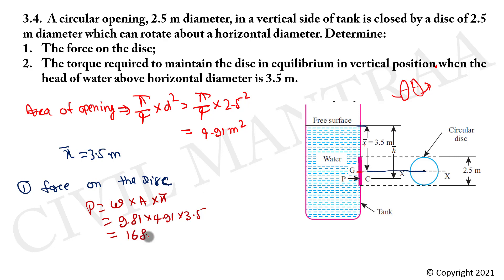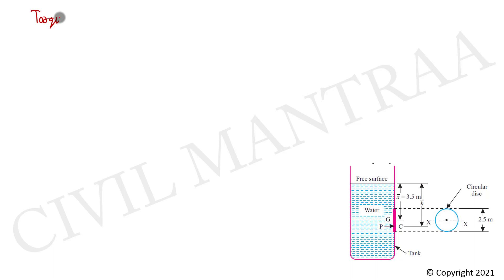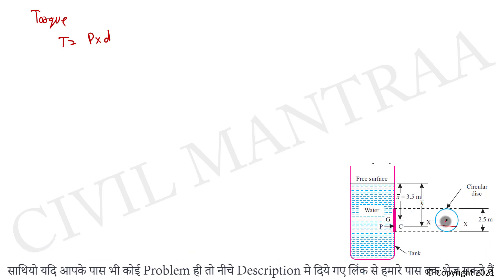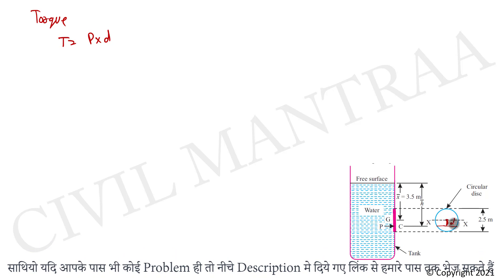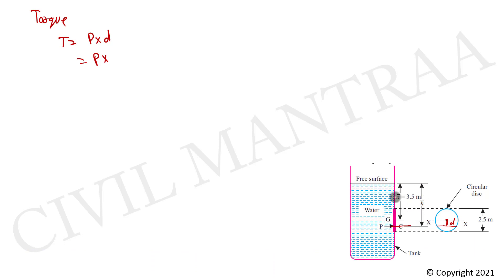Now we will find the center of pressure h-bar. h-bar equal to Ig upon A times x-bar plus x-bar. Here Ig is the moment of inertia about the centroid.